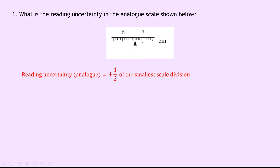So if I look at this example I've got a scale in centimetres and I've got 10 divisions between the 6 and the 7. So that means that each scale division is going to be 0.1, which means we have plus or minus half of 0.1 centimetres, which gives an answer of plus or minus 0.05 centimetres.